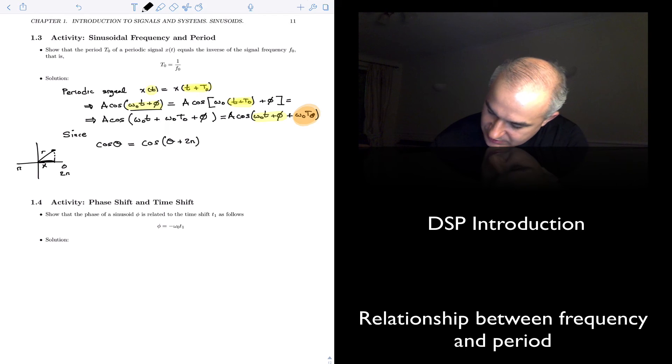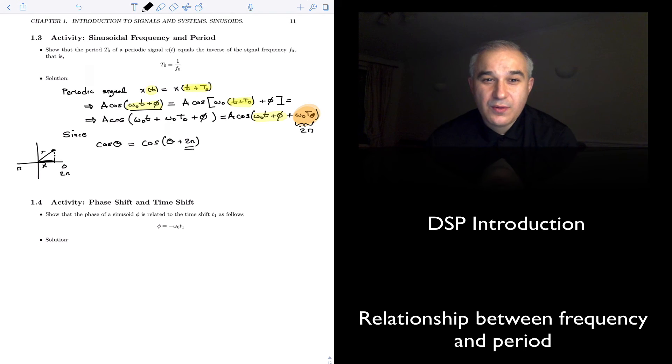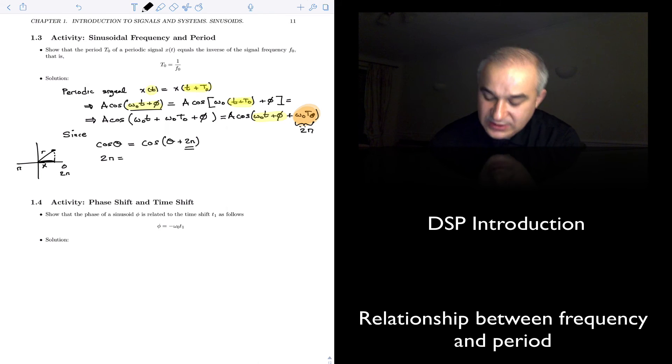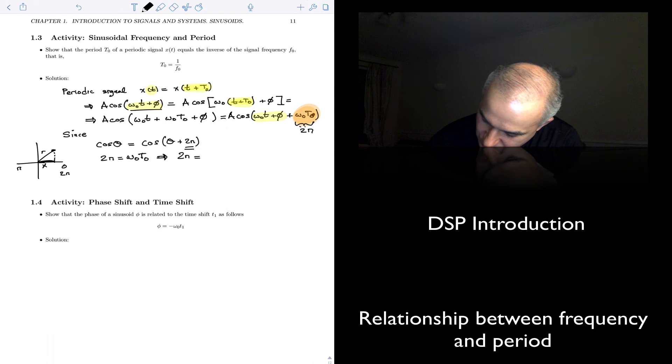We can see, therefore, that this must be the two pi. So we have two pi equals omega 0 t0. Or two pi equals two pi times f0 times t0.